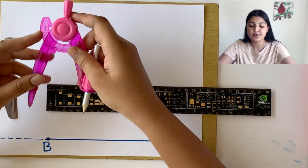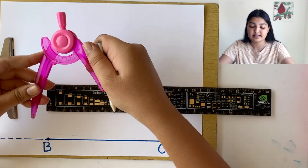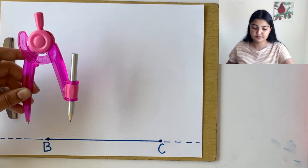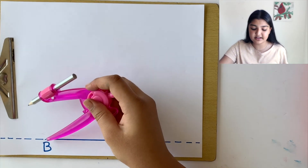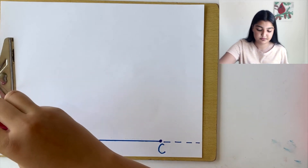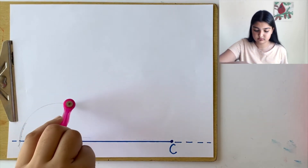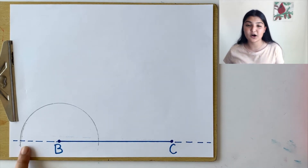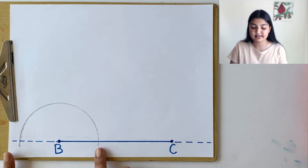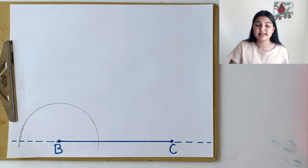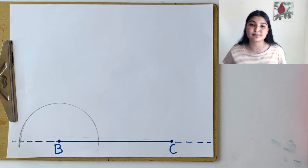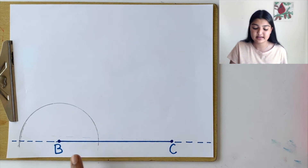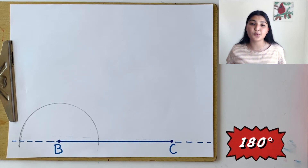Now let's take our compass. We can take any measurement — for this case, let's take a measurement of around 2 inches. Placing the leg of the compass on point B, let's make an arc. As you can see, this arc intersects at two different points. If we were to continue this arc, it would make a circle with an angle measurement of 360 degrees. But since this arc is only half of a circle, it has an angle measurement of only 180 degrees.